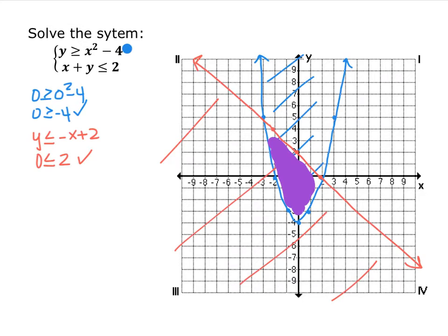So I graphed the parabola that's been shifted down 4. When I tested the point 0, 0, I got that 0 was greater than or equal to negative 4, which is in fact true. So I shaded the part of the parabola that included the origin, which was inside the parabola.